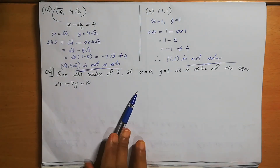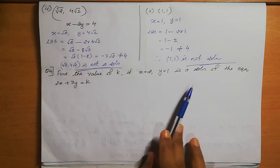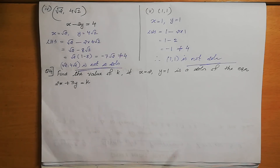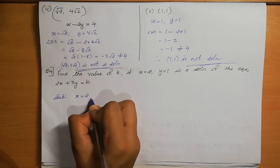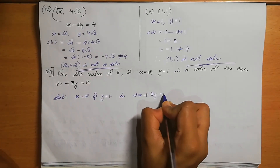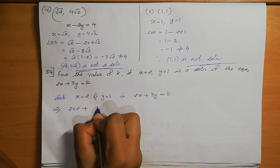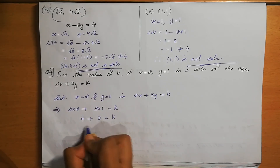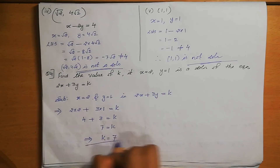Question number 4: Find the value of k if x=2, y=1 is a solution of the equation 2x + 3y = k. Since (2, 1) is a solution, substitute directly: 2×2 + 3×1 = k, so 4 + 3 = k, giving k = 7. This is the answer.